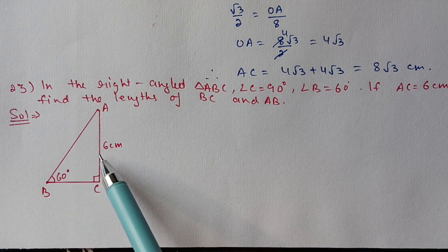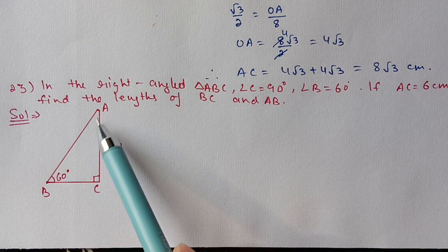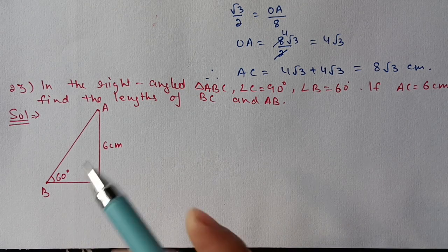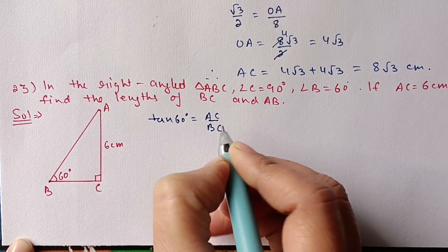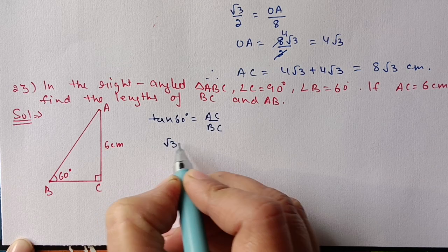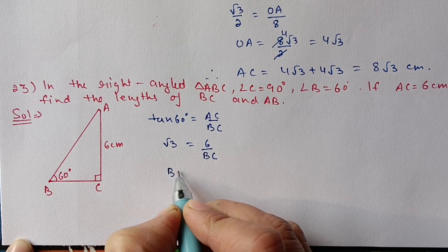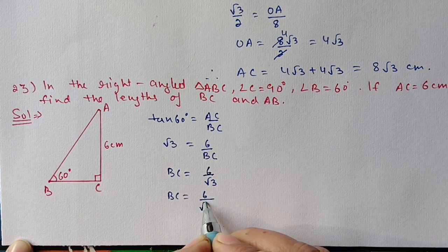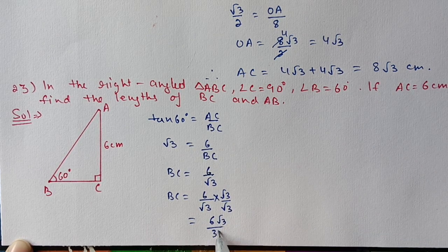We need to find BC. The relation between AC and BC involves tan, so tan 60° = AC/BC (height upon base). tan 60° = √3, AC = 6, so BC = 6/√3. Rationalizing by multiplying with √3 up and down: 6√3/3, which gives BC = 2√3 centimeters.